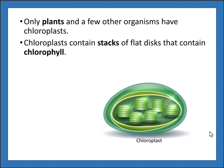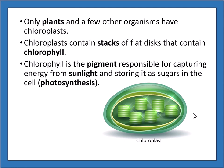Only plants and a few other organisms have chloroplasts. Chloroplasts contain stacks of flat discs containing chlorophyll, which is the pigment that collects light. Chlorophyll captures energy from sunlight and stores it as sugars in the cell. This process is known as photosynthesis — sunlight being converted into sugar which is used for energy in the cell, and the chloroplast is where that occurs.